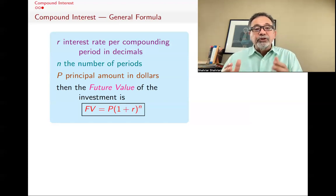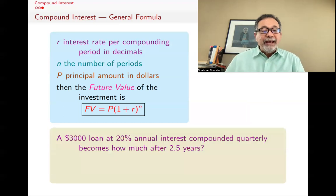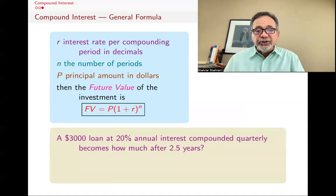One final example. What if I have a $3,000 loan, maybe on my credit card, and I don't pay anything, it's a 20% annual interest rate, compounded quarterly. How much will I be owing after two and a half years? So here, P is $3,000.